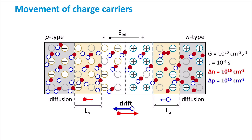Here they will experience an electrical force that will act on them. Electrons that reach the depletion region will move to the N-side and holes to the P-side. As the minority carriers at the depletion region are swept away, this decreases the concentration of these carriers at the edge. This induces a concentration gradient and minority carriers further away from the depletion region will diffuse towards the depletion region and eventually continue to be swept away.